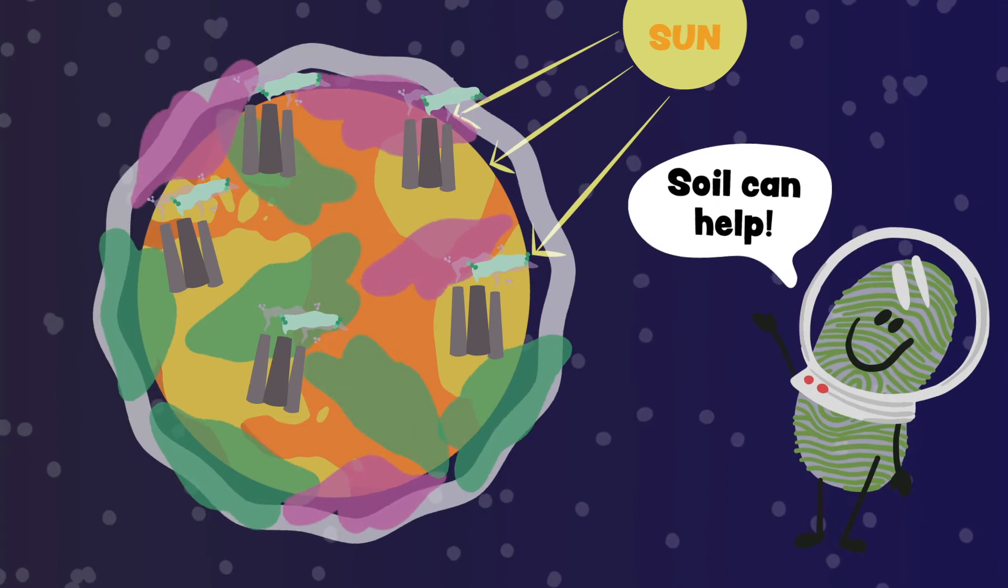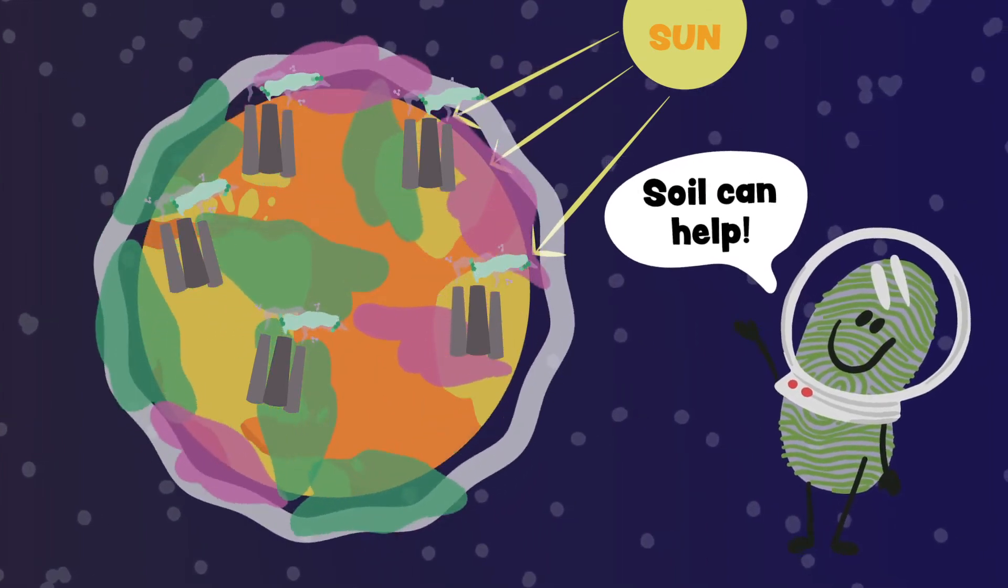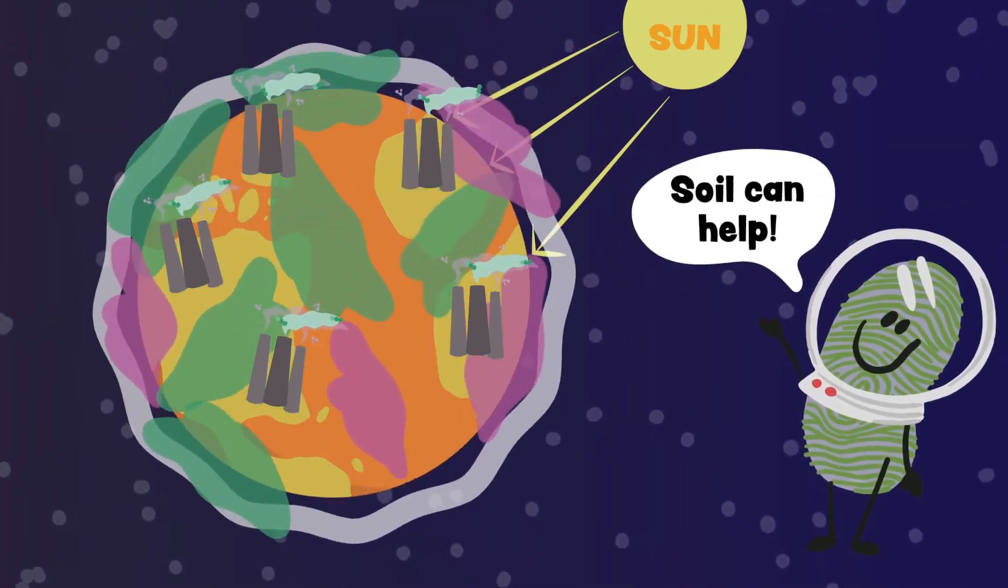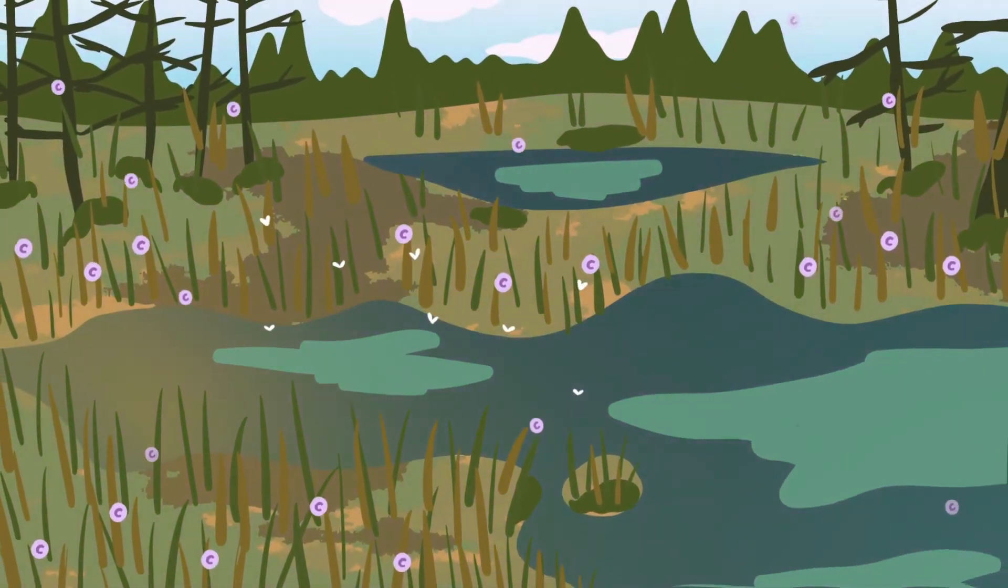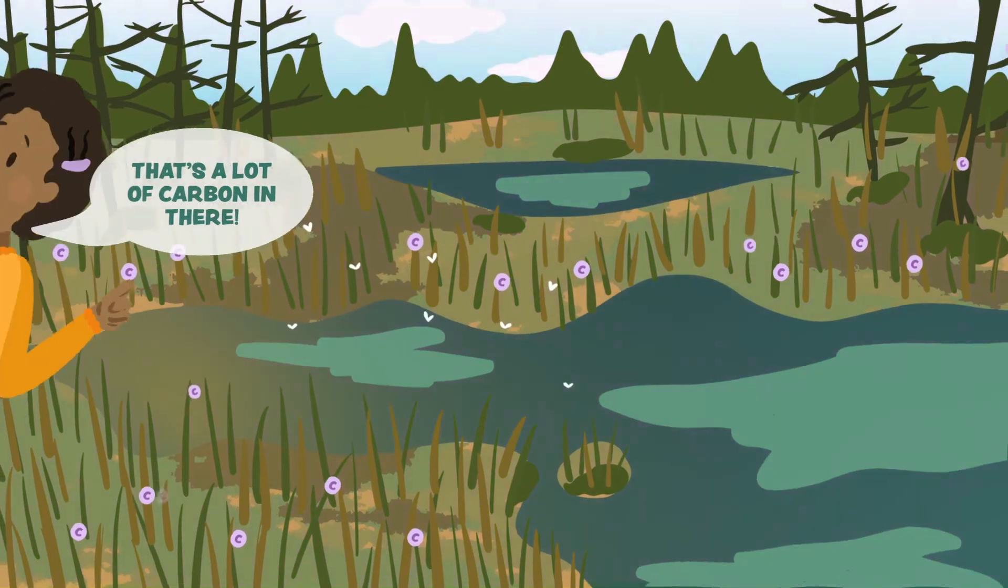But soil can help, because soil is a solution to climate change. Soil is so good at storing carbon and getting it out of the atmosphere, that it is called a carbon sink.